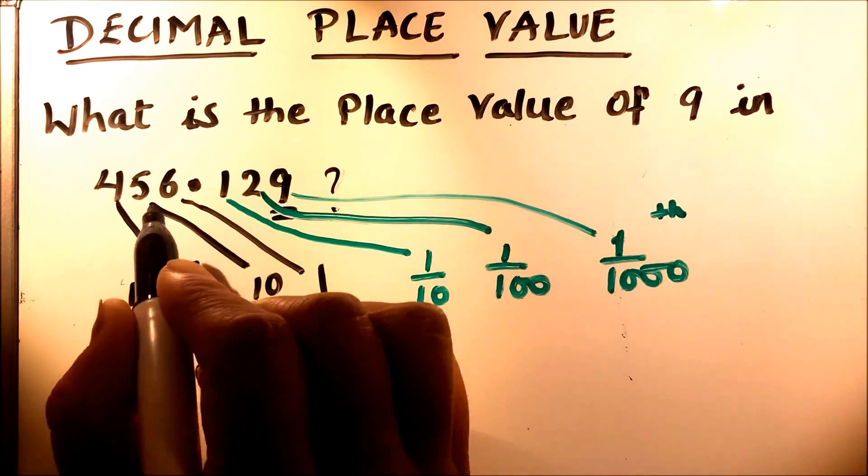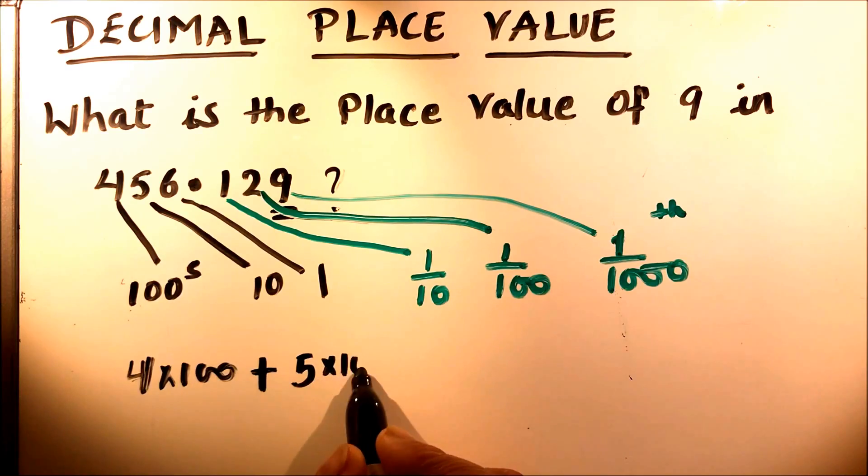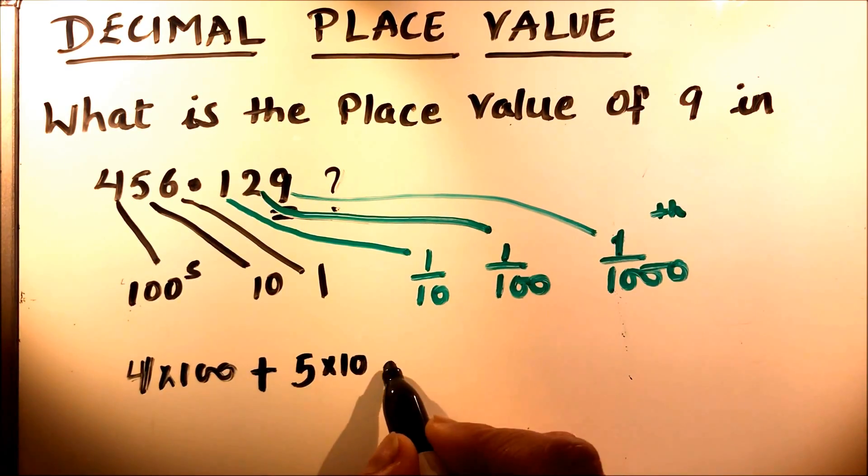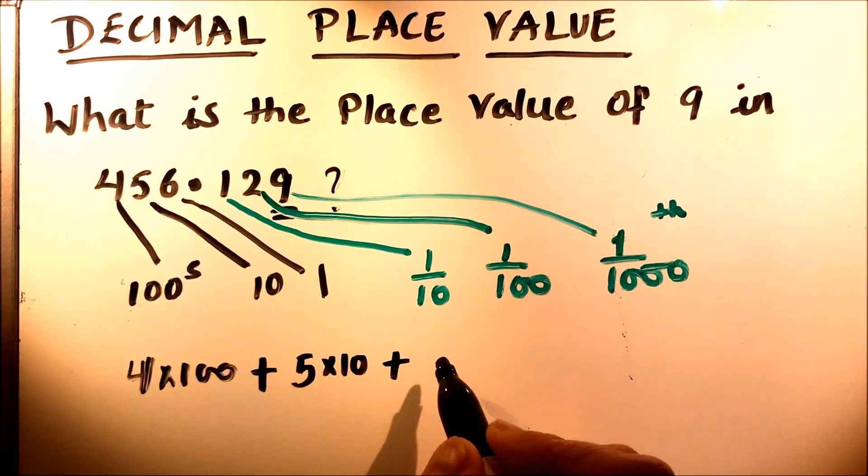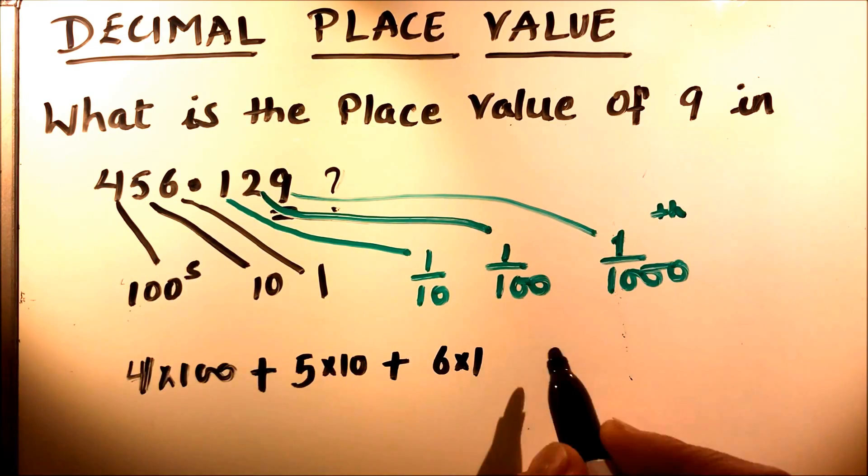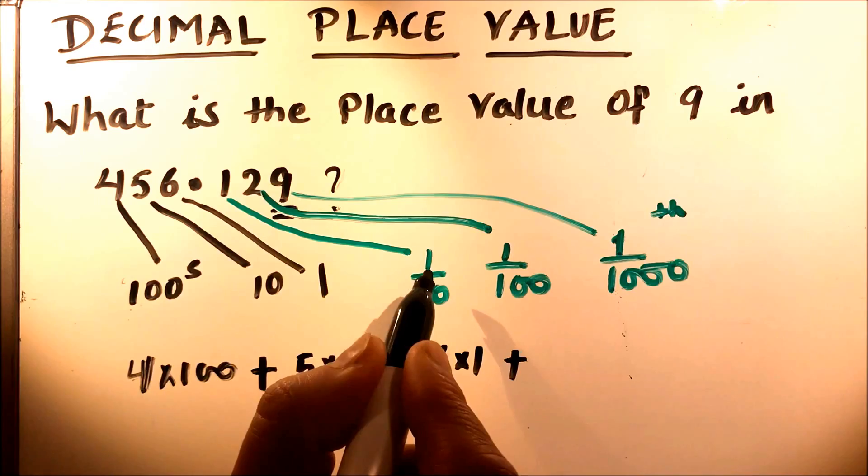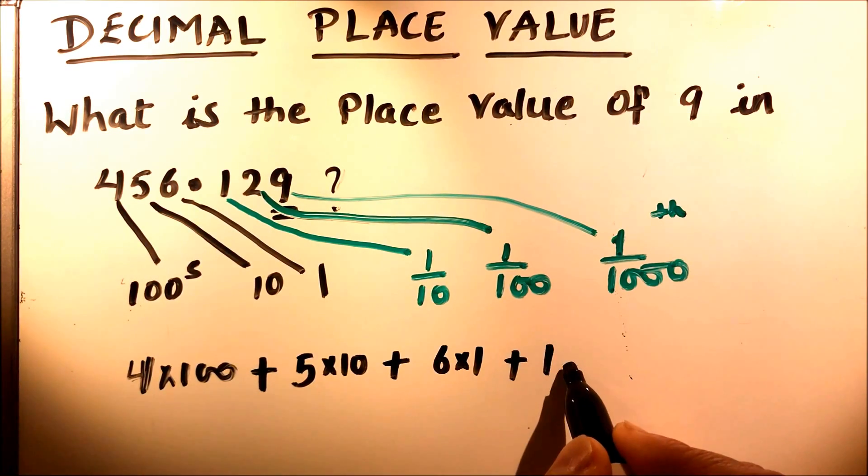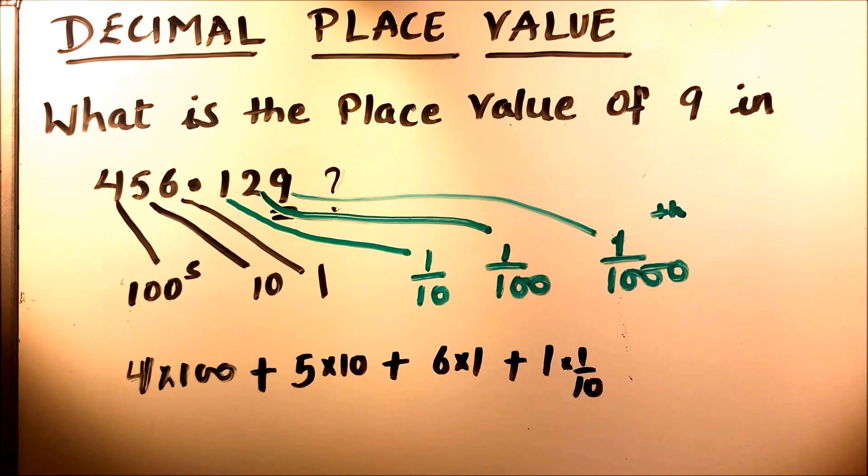Then 5 times 10 because 5 is in the tens place, so 5 times 10 is 50, which we are going to add to 400 to make 450, and then 6 times 1 because it is in the ones place. Then we have one tenth, so one tenth is 1 times one-tenth.